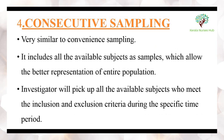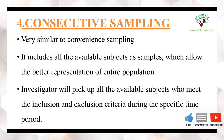The fourth method is consecutive sampling, which is very similar to convenient sampling. This method includes all available subjects as samples, allowing better representation of the entire population. The investigator picks up all available subjects who meet the inclusion and exclusion criteria during a particular specific time period.